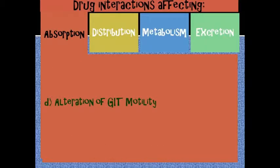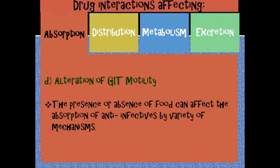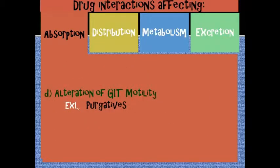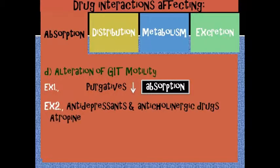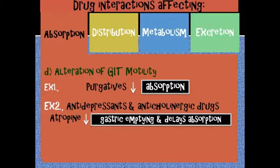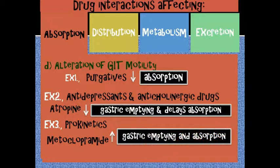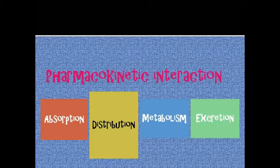The last absorption mechanism is the alteration of GIT motility. The presence or absence of food can affect the absorption of anti-infectives by a variety of mechanisms. High-fat meals can significantly increase the extent of absorption of fat-soluble compounds. Examples include: purgatives, which decrease absorption; antidepressants and anticholinergic drugs like atropine, which decrease gastric emptying and delay absorption; and prokinetics like metoclopramide, which increase gastric emptying and absorption.